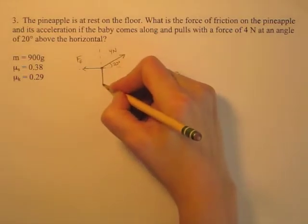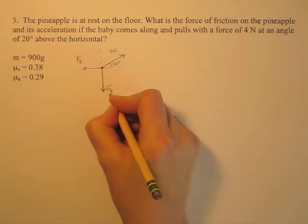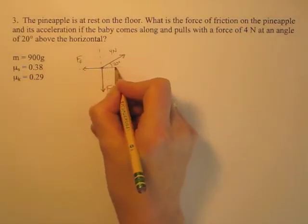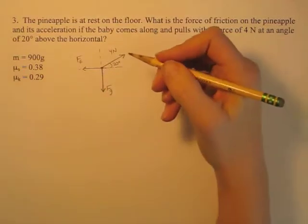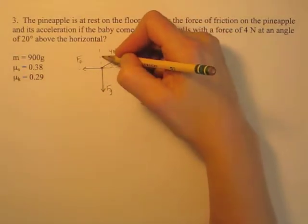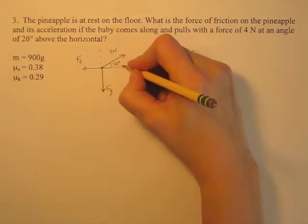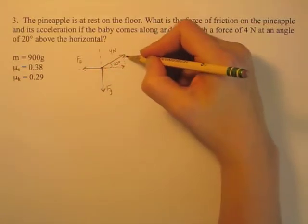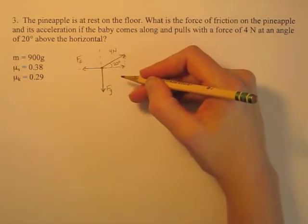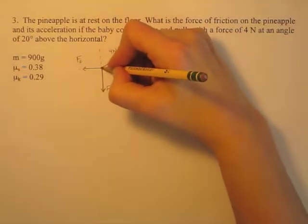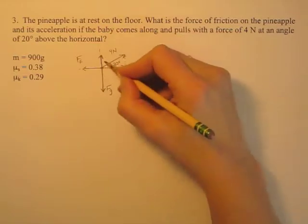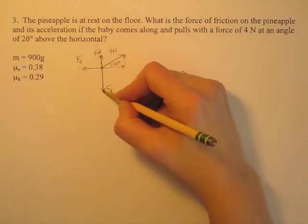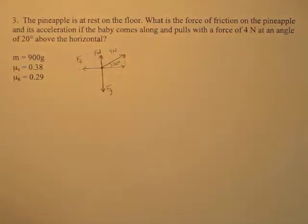There is a force of gravity on the pineapple, and then there's a normal force of the floor pushing up. There are components to this applied force. I'm thinking about how long to draw my normal force arrow, so I need to think about the size of these forces. The upward part of this force is some length, and the pineapple won't accelerate up and down, so vertically the forces on the pineapple need to be balanced. The normal force plus the vertical component of the baby's force together must equal the force of gravity. That's my free body diagram.